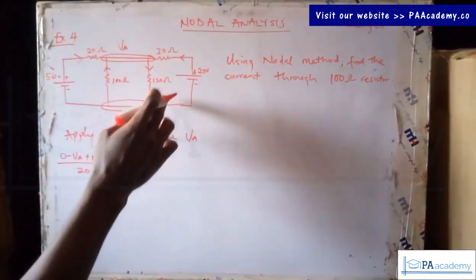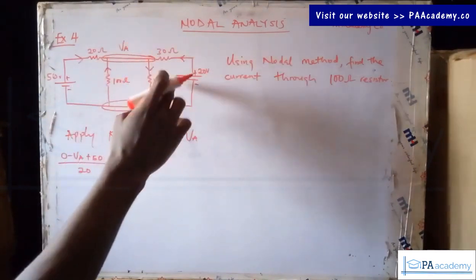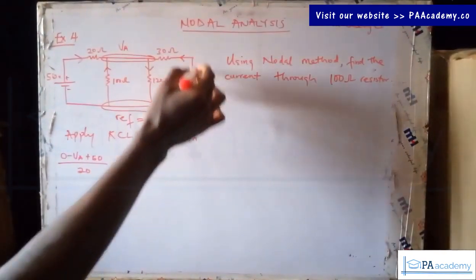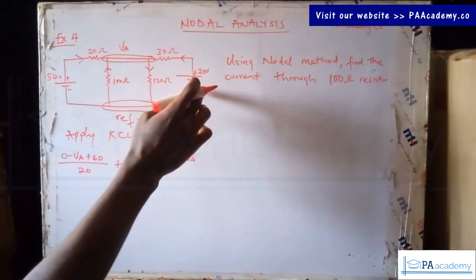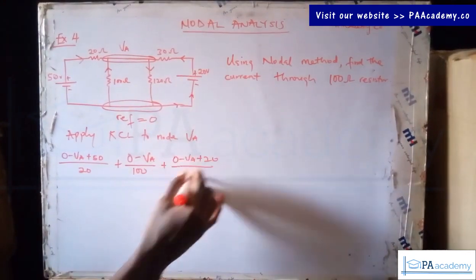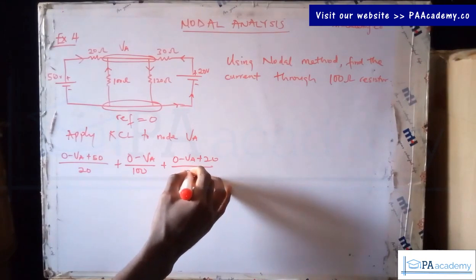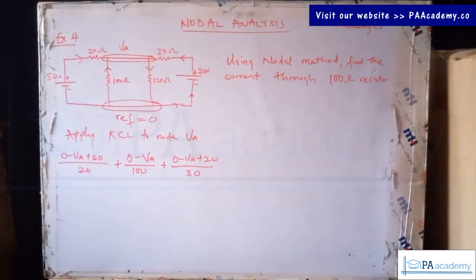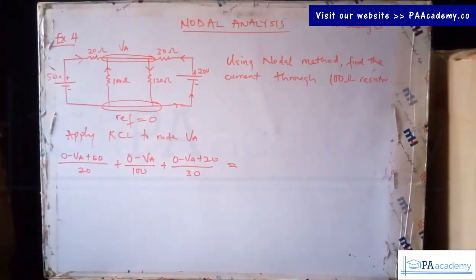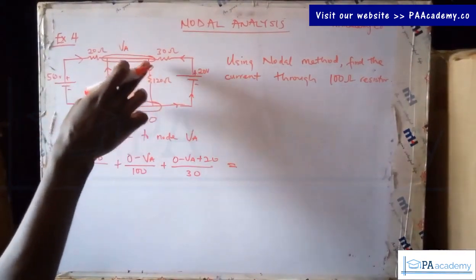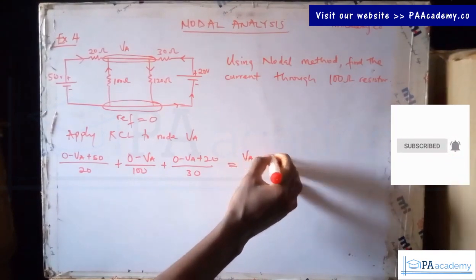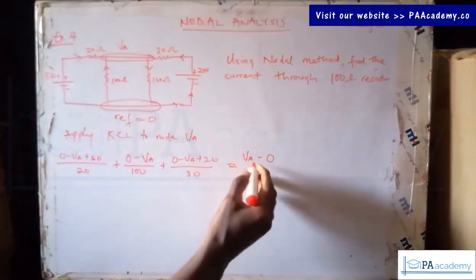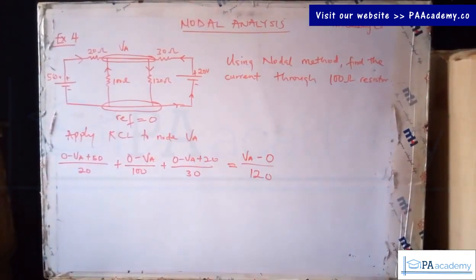For the third branch going into VA — based on the direction we picked and noting the voltage source goes from minus to plus — we have (0 − VA + 20) divided by 30. For the outgoing current, from VA to the reference, that is (VA − 0) divided by 120. So our KCL equation is: (0 − VA + 50)/20 + (0 − VA)/100 + (0 − VA + 20)/30 = VA/120.